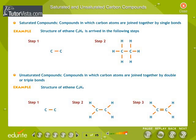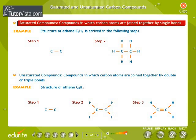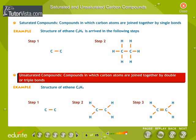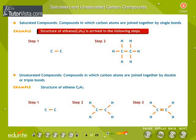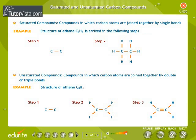Saturated and unsaturated carbon compounds. Saturated compounds are compounds in which carbon atoms are joined together by single bonds. Unsaturated compounds are compounds in which carbon atoms are joined together by double or triple bonds. To arrive at the structure of simple carbon compounds, the first step is to link the carbon atoms together with a single bond and then use the hydrogen atoms to satisfy the remaining valencies of carbon. Unsaturated carbon compounds are more reactive than saturated carbon compounds.